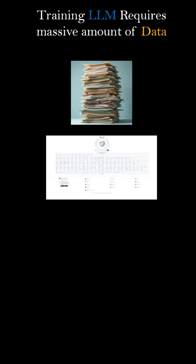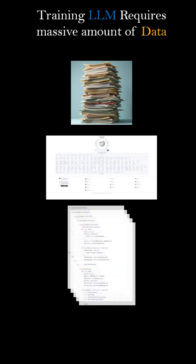Large language models are trained in three phases. The first phase is the pre-training phase, and the model trained in this phase is called the base model or foundational model. These models are trained on massive datasets containing books, journals, the whole internet, a lot of coding data, and more.